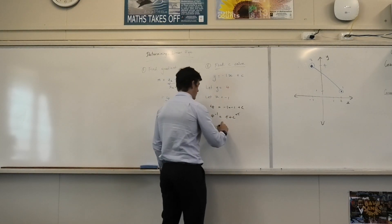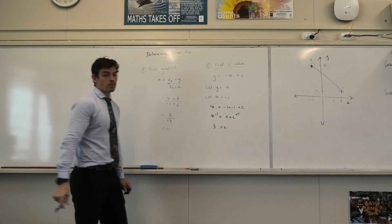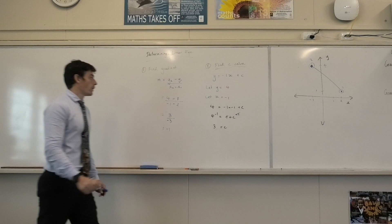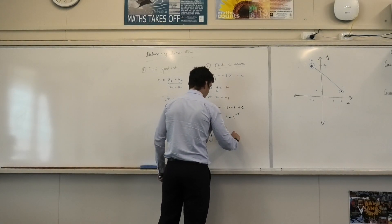Cancel the ones out. C equals 4 minus 1, which is 3. Now I've got all my unknowns. My equation comes to the form y equals negative x plus 3.